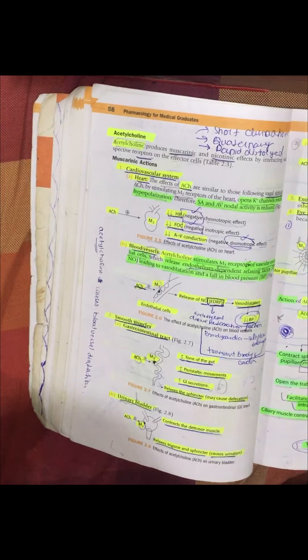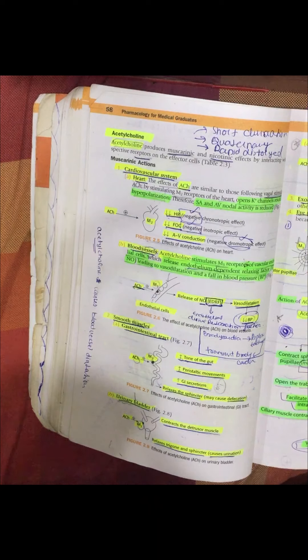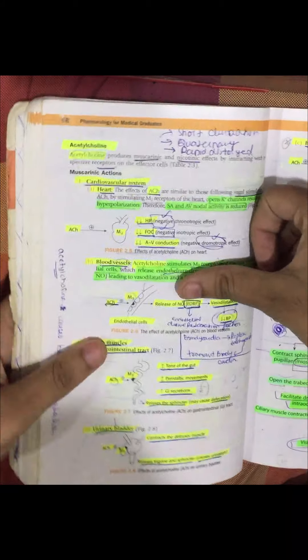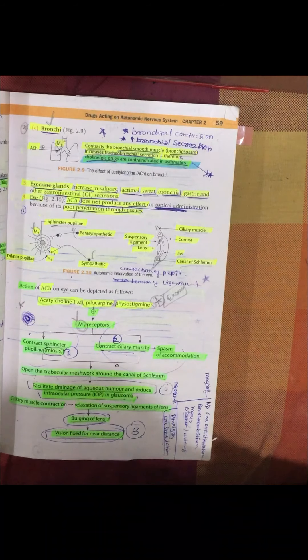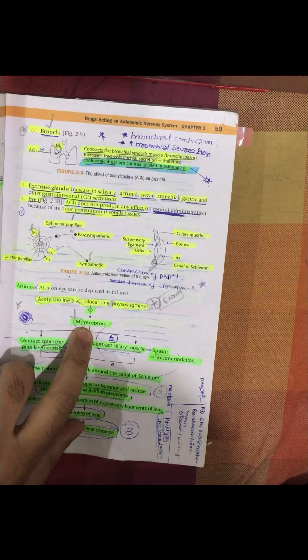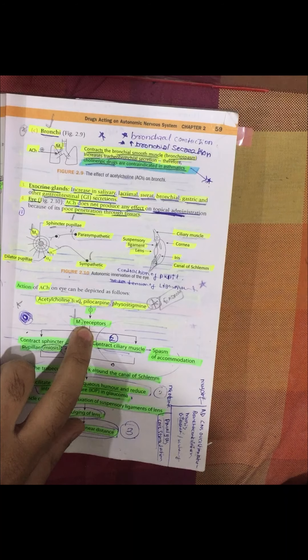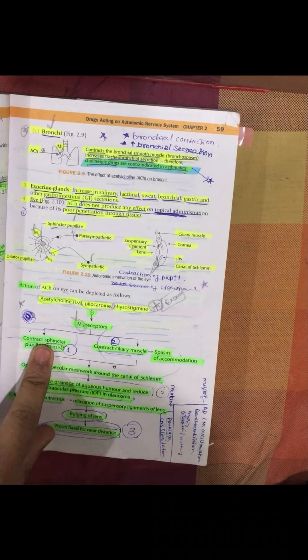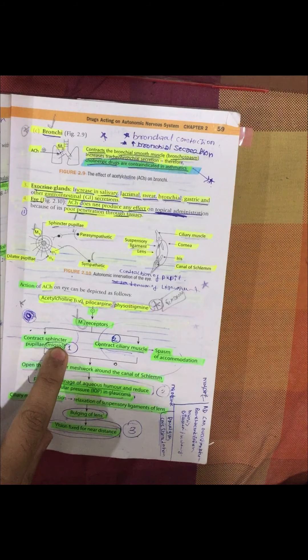Moving from top to bottom: first the eyes, then lungs, then heart, then GIT, then bladder. In the eye, acetylcholine, pilocarpine, and physostigmine act on M3 receptors. M3 receptors are present in the eye, so these drugs act on M3 receptors and produce three effects.